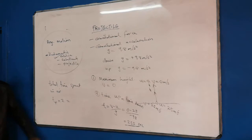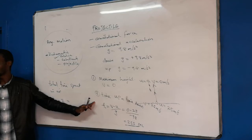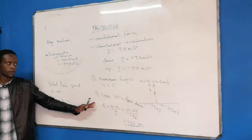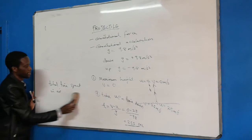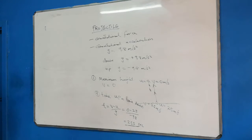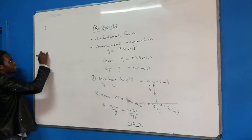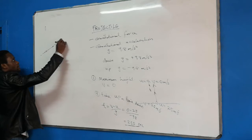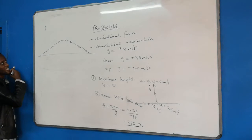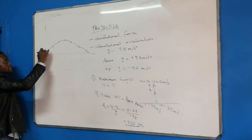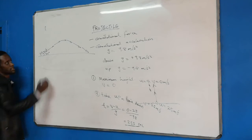If you don't understand, please ask. Now we take our study a little bit further. Our projectiles — objects will be projected at an angle. The object is thrown at 25 meters per second at an angle of 30 degrees.